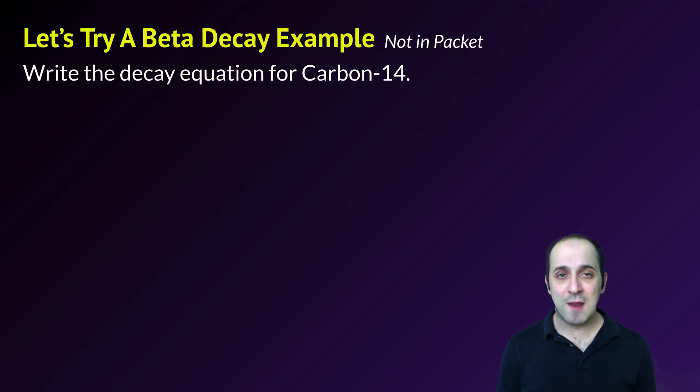Let's try a beta decay example now. I'd like you to write the beta decay equation for carbon-14. Pause the video, try it on your own, and then hit play. It's carbon-14, the symbol is C, the mass is 14, and the atomic number for carbon is 6.